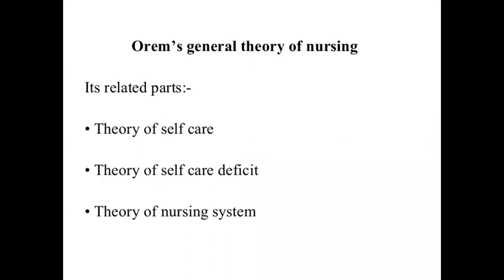Orem's general theory of nursing has three related parts: the theory of self-care, the theory of self-care deficit, and the theory of nursing system. Together, these three parts are known as Orem's general theory of nursing.